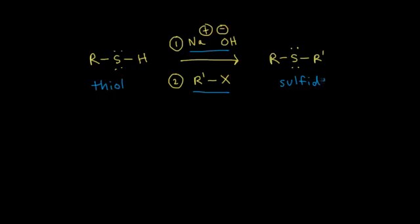Here is my sulfide right here. This reaction is the analog of the Williamson ether synthesis, which we've seen in an earlier video. In that video, we started off with an alcohol, reacted it with a strong base in the first step and an alkyl halide in the second step, and we formed an ether as our product. So the thiol is the sulfur analog to an alcohol, and a sulfide is the sulfur analog to an ether.